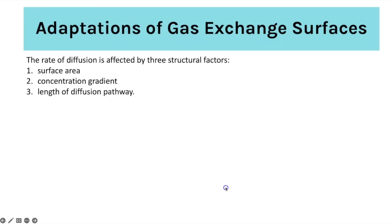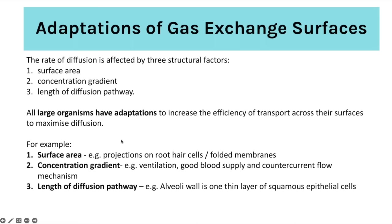The running theme throughout this topic is looking at what provides the large surface area, what helps to maintain a concentration gradient, and what reduces the diffusion pathway. In general, to increase the surface area you're looking for structures with projections — like root hair cells with their long protruding part — or folded membranes, which also increase the surface area.